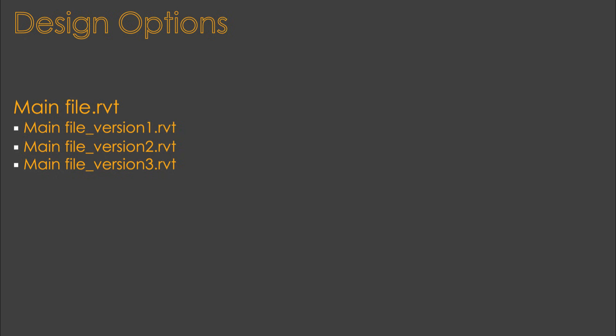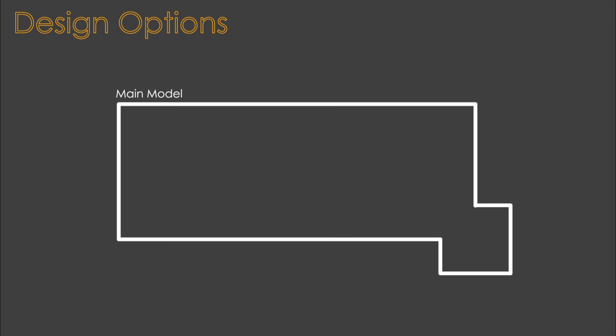What Design Options allows you to do is take your main model and select certain elements, then create an option set. An option set creates a whole separate part of the model that works basically like a link in Revit — it's separate and you can't edit it inside the main model, but you can edit it within its own context.